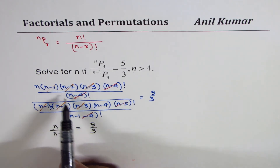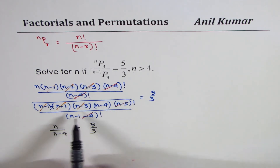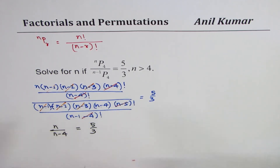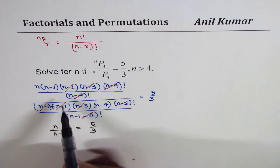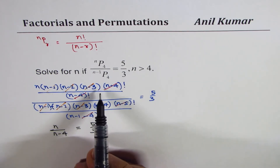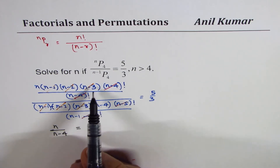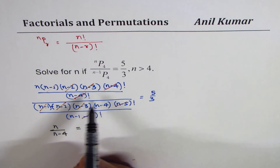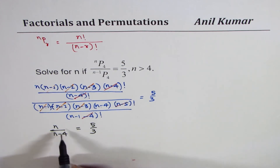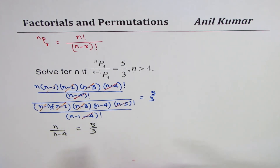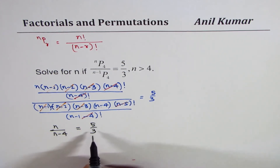When we cancel all these terms, we are sure that since n is greater than 0, none of them is 0, which is why we are cancelling them. None of these terms is 0. So we get n over (n minus 5) equals 5 over 3.